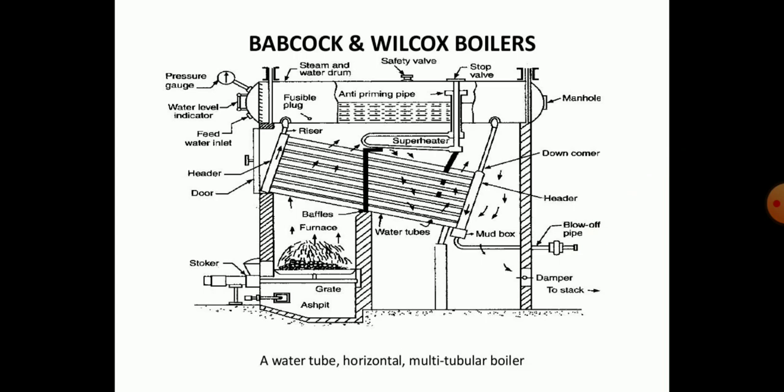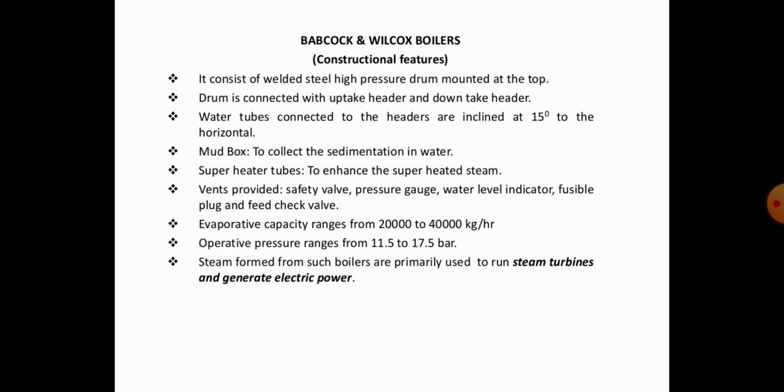Babcock and Wilcox boilers fall into the category of water tube boilers. In its construction, it consists of a welded steel high-pressure drum mounted at the top, connected to uptake and downtake headers. Water tubes connected to the headers are inclined at 15 degrees to horizontal, and a mud box collects sedimentation from the water. Superheater tubes are used to produce superheated steam, while vents are provided for safety valves, pressure gauge, and water level indicator. Its evaporative capacity ranges from 2000 to 4000 kg per hour, with operating pressure ranging from 11.5 to 17.5 bar.